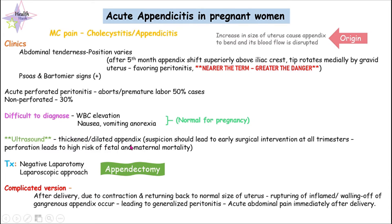The main way to diagnose this condition is by ultrasonography. On ultrasound, we can see signs of a thickened, dilated appendix, and if we see these kinds of signs, we suspect the patient has appendicitis.